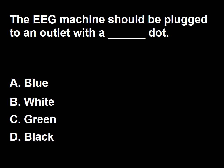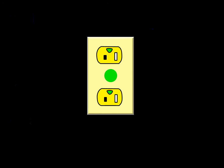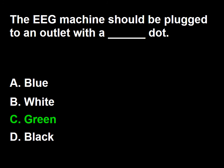The EEG machine should be plugged to an outlet with a dot of which color? A: blue, B: white, C: green, D: black. The EEG machine should be plugged to an outlet with a green dot. The green dot in a receptacle indicates good working condition and a high degree of safety. So the answer is C.